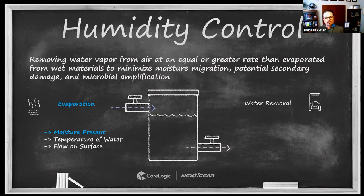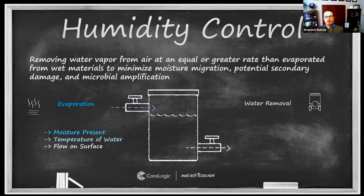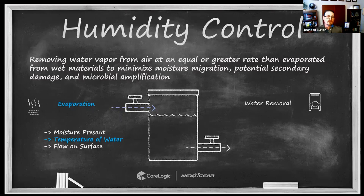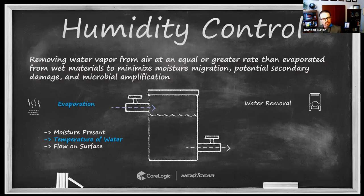If removing building materials isn't an option, and adding humidity removal still is not an option, there are still additional choices for slowing evaporation to prevent secondary damages. One option is to reduce the temperature of the environment — it's the temperature of the materials driving the evaporation rate, not just the air temperature, as we've talked about in previous episodes, especially Episode 2.